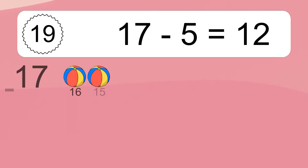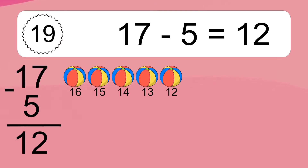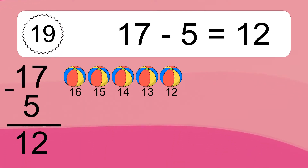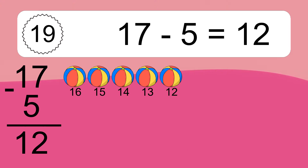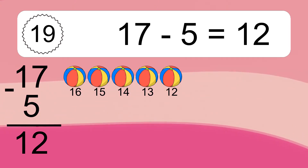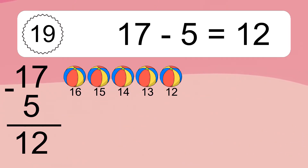17 minus 5 equals what? 17 minus 5 equals 12. Let's count it: 16, 15, 14, 13, 12.